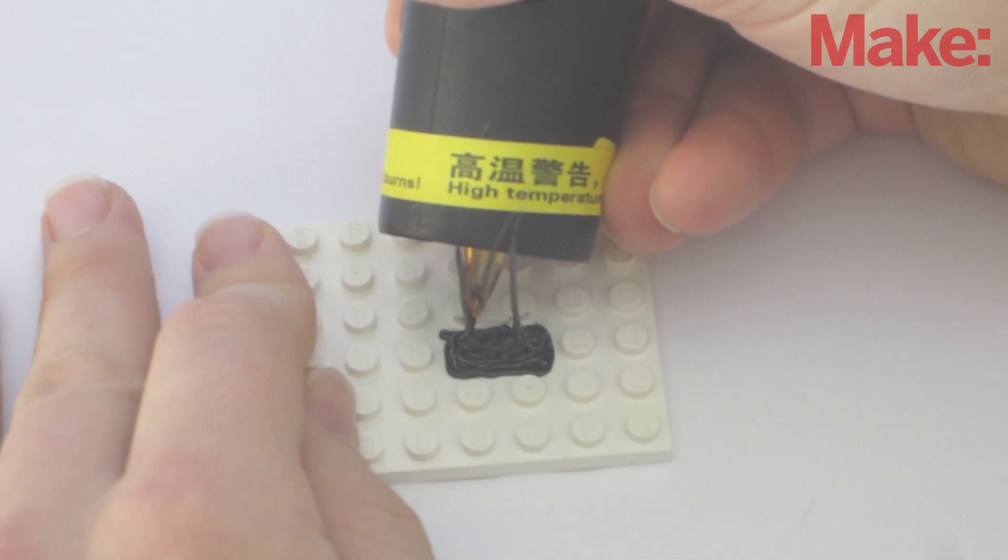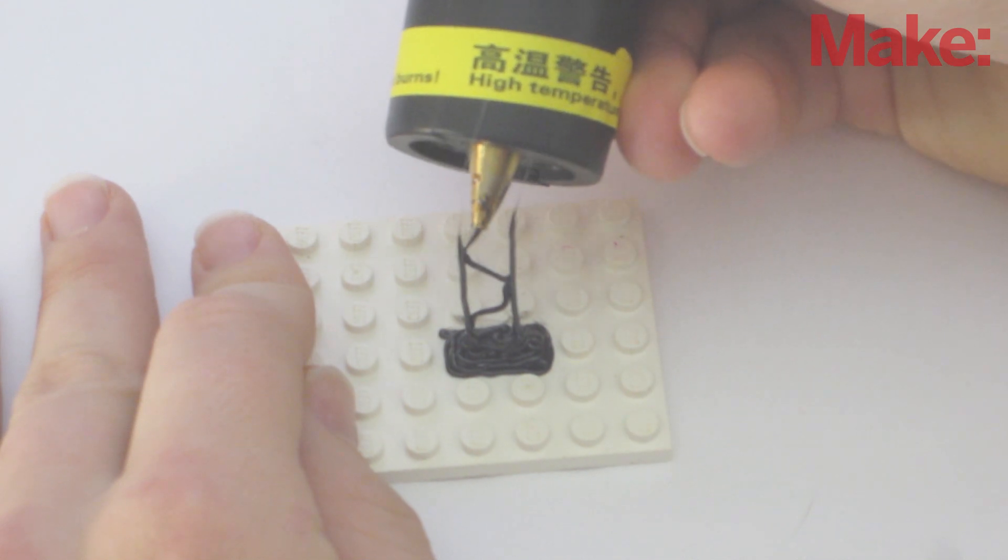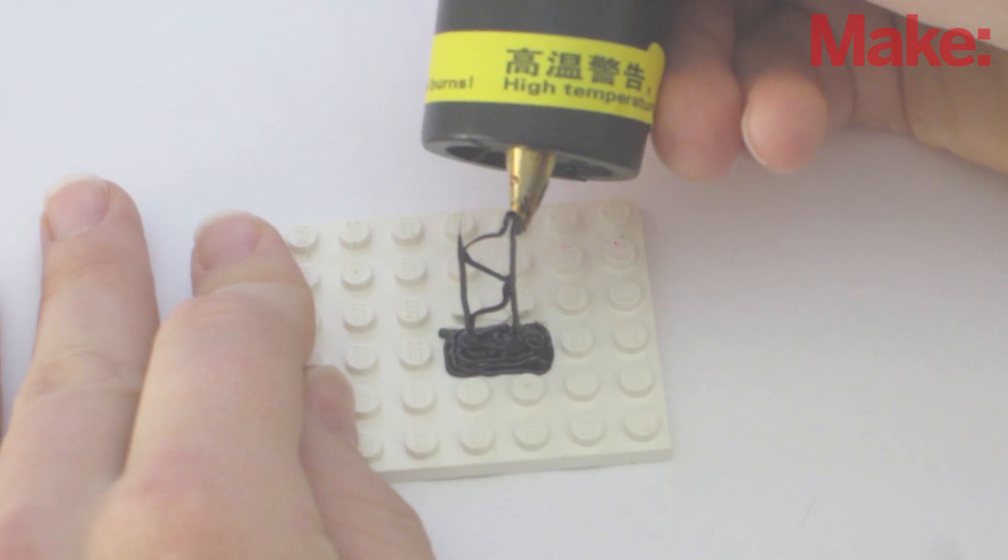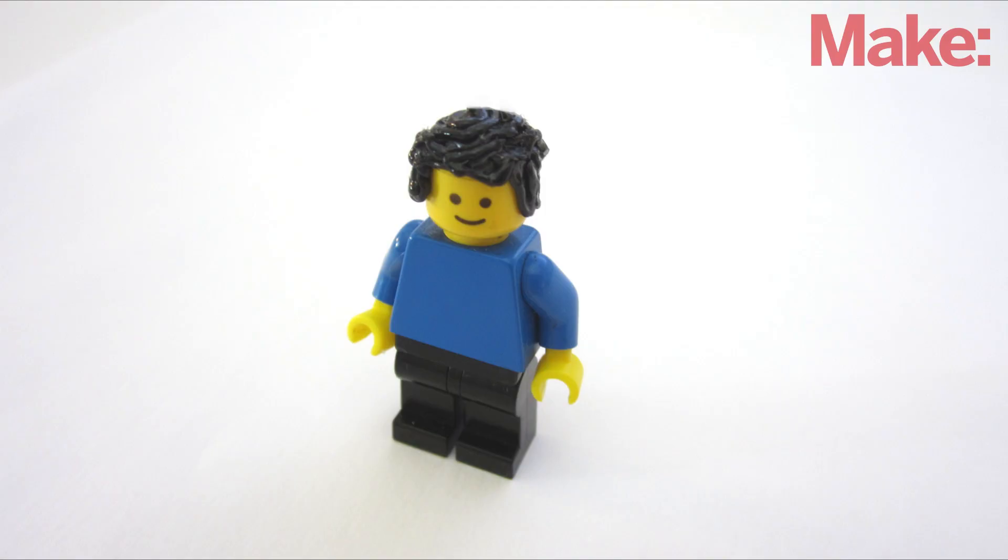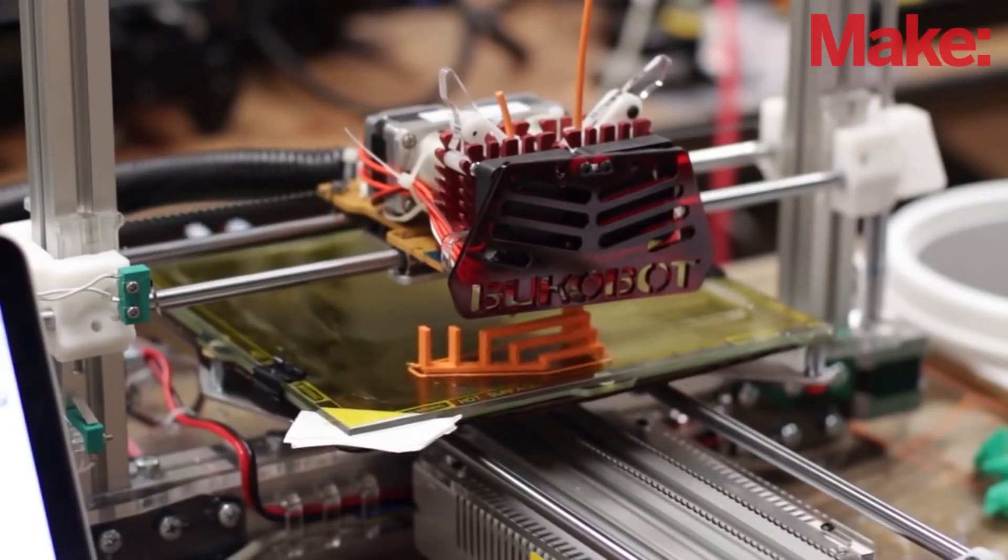3D printing pens can also be used to modify and repair other objects that are made from the same type of plastic as the filament. For example, Legos are made from ABS plastic, so it's really easy to use this pen to customize your Lego pieces. You can also use it to repair objects that were made on your desktop 3D printer.